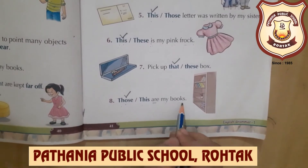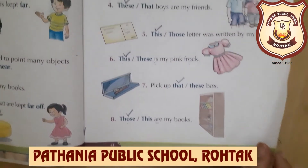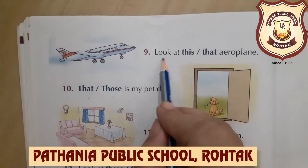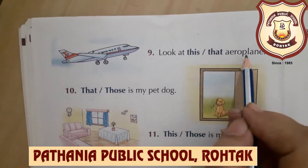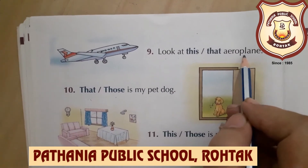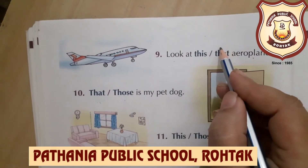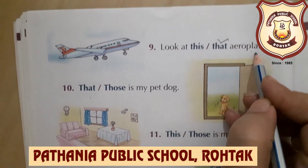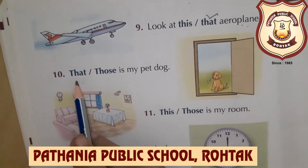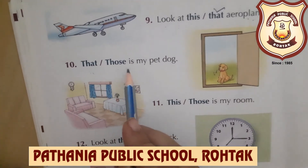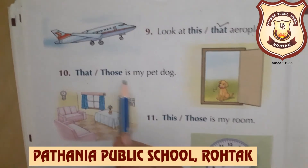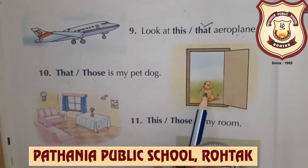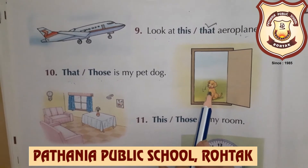Those are my books. Now: look at this or that aeroplane. An aeroplane is far away from us, so we use 'that'. Look at that aeroplane. Next: that or those is my pet dog. Dog is single, so we use 'that'. That is my pet dog.